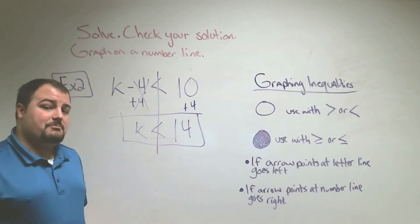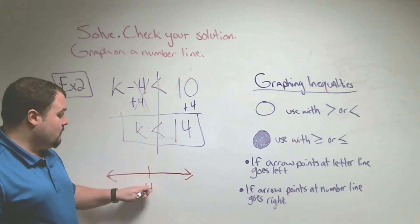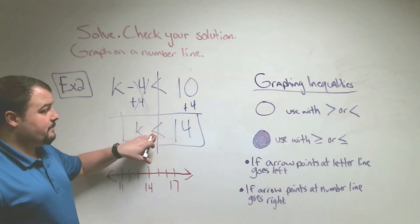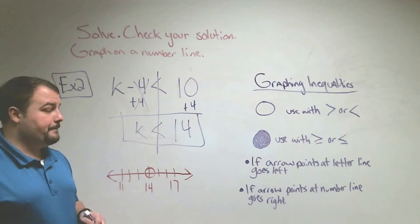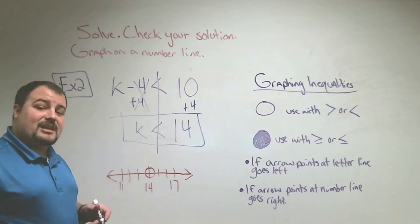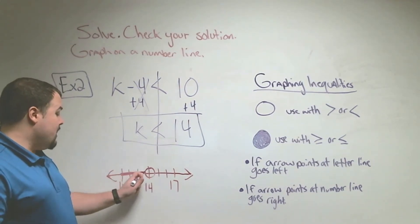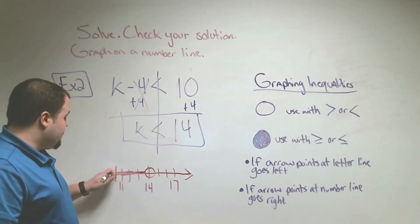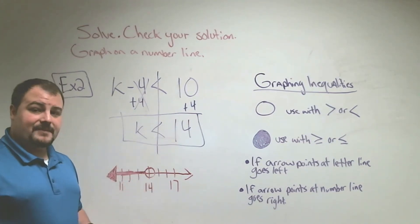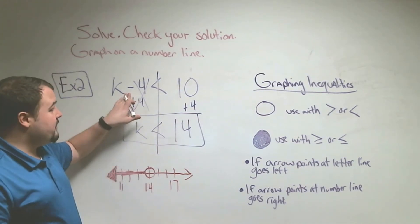Now that we have our answer, we graph it on the number line. Put 14 in the middle, count 1, 2, 3 up to 17, and 1, 2, 3 down to 11. Look at the symbol — it's an open circle, so put an open circle on 14. The arrow points at the letter; letter begins with L, left begins with L — so if it points at the letter, the line goes left. Anything to the left is our answer. As long as k is smaller than 14, whatever's on the left side will be smaller than 10.